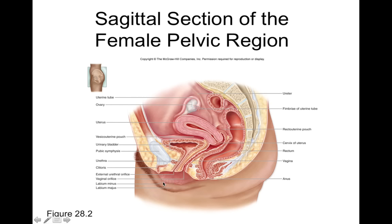The labia majora will engorge with blood during sexual excitement. Where the labia minora meets at the clitoral hood, you find the clitoris, which is also made of erectile tissue — corpus cavernosum that engorges with blood during sexual excitement. There are a lot of nerve endings here, making it a very sensitive area.